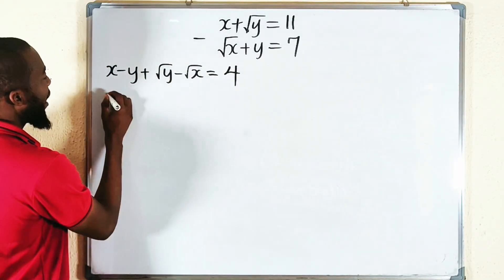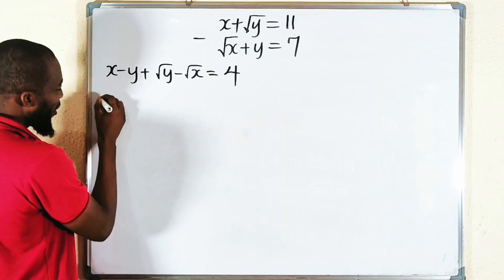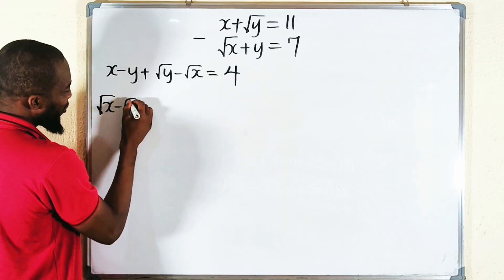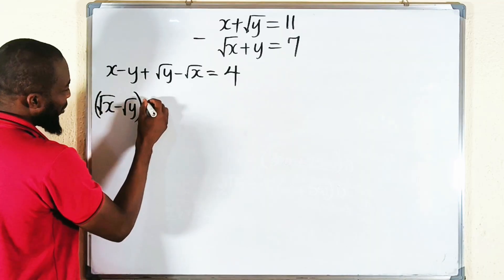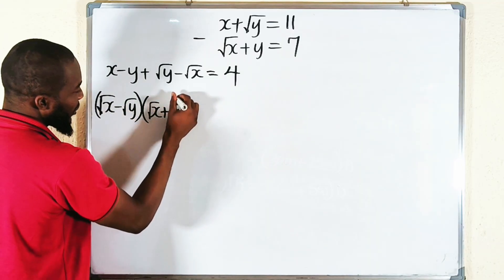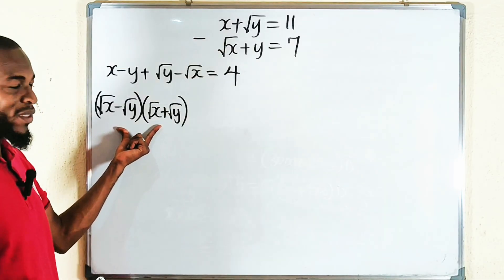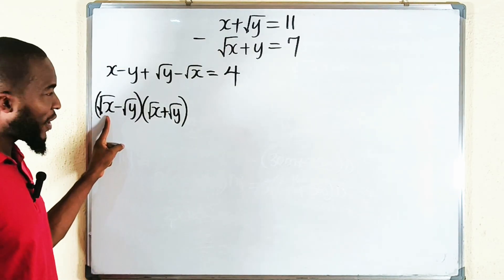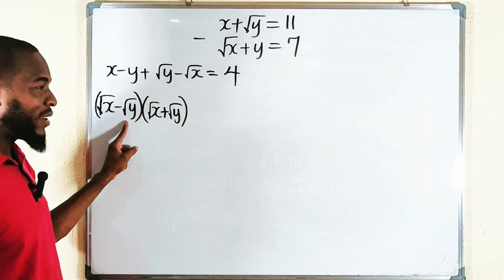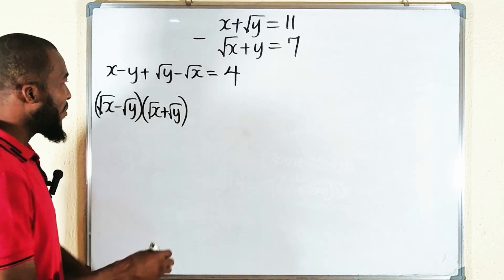Now, x minus y is the same thing as square root of x minus square root of y, multiplied by square root of x plus square root of y. This is nothing but the difference of two squares — squaring the first term gives x, squaring the second gives y, so these expressions are equivalent.